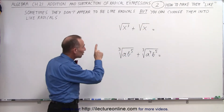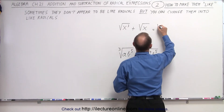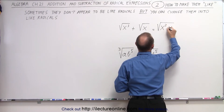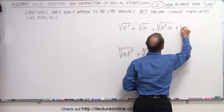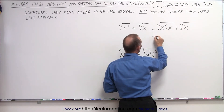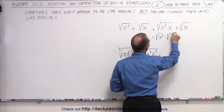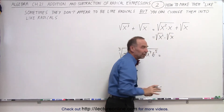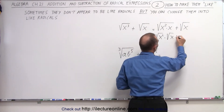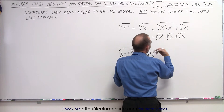But notice that we can change the one on the left — that one can be written as follows. We can write this as the square root of x squared times x, plus the square root of x. And then we can write this as the square root of x squared times the square root of x — we don't have to do that, but it makes it easier to see what we can do next — plus the square root of x. And then you can see that the square root of x squared is simply x.